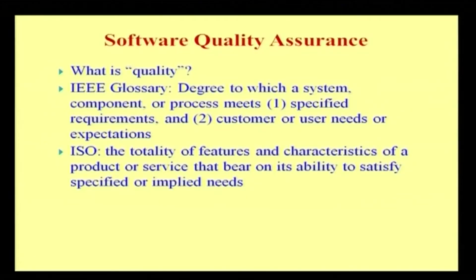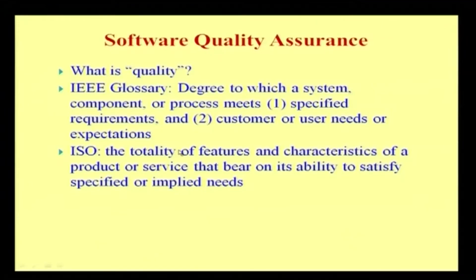ISO's definition of quality is the totality of features and characteristics of a product or service that bear on its ability to satisfy specified or implied needs. Here we have two specific key points: one is feature and the other is characteristic. Any product must satisfy the entire customer needs through both its features and characteristics combined — the totality of features and characteristics that bear on its ability to satisfy specified or implied needs of any specific customer.